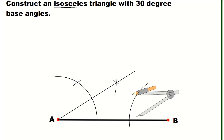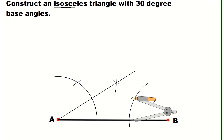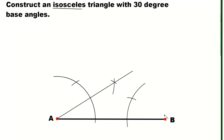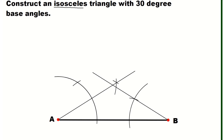We will now take our compass, place the pointer on the intersection of the segment and the arc, and then draw an arc intersecting the major arc. There is now our 30-degree angle. We are going to draw a thin line from point B towards the intersection of the two arcs. Let's name the intersection of these two thin lines as point C.